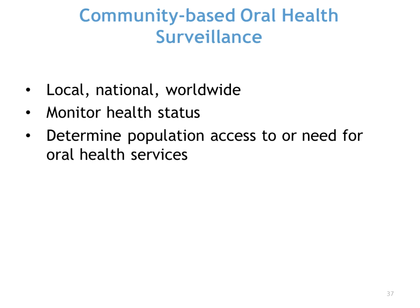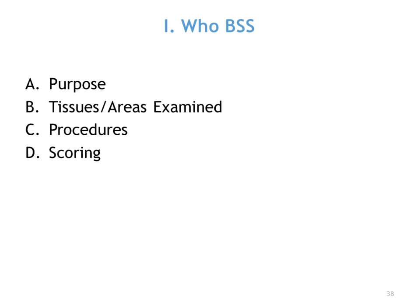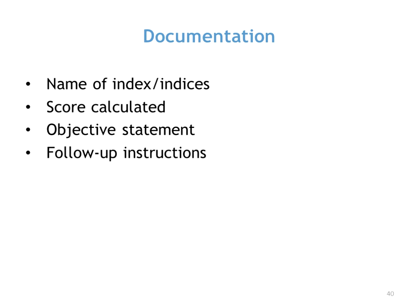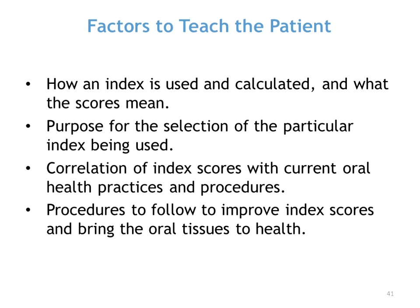There are also community-based oral health surveillance tools that determine the population's access to or need for oral health services, including those from the World Health Organization — though we won't go into detail on those here. When you use an index, you need to name the index, give the score, provide an objective statement, and give follow-up instructions — what are you going to do about it? Did you refine the patient's brushing technique if they were missing the cervical thirds? That all goes with the documentation, not just the index itself.